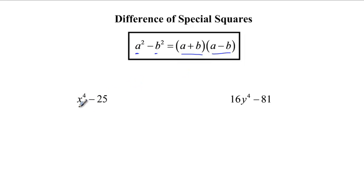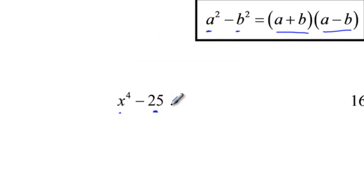The problem is when we're looking at something like x to the fourth minus 25, you might say, well, 25 is easy, that's 5 squared, but x to the fourth, that's a perfect fourth, it's not a perfect square. Well, you're right, but we could write this as something squared minus something squared, and that's what we're going to do. I put parentheses here as something squared minus something squared, and really when I look at this, I'm going to say it's x squared squared, which is x to the fourth, and 5 squared, which is 25. So this statement right here is equivalent to x to the fourth minus 25.